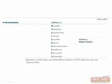P450 inhibitors can be remembered with the mnemonic MAGIC-RAX, which stands for some macrolides such as erythromycin (but not others such as azithromycin), amiodarone, grapefruit juice, isoniazid, cimetidine, ritonavir, acute alcohol abuse, ciprofloxacin, ketoconazole, and sulfonamides.